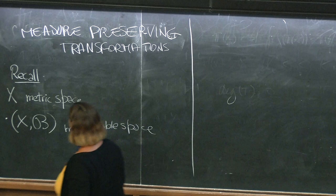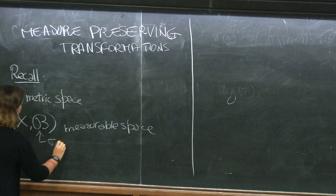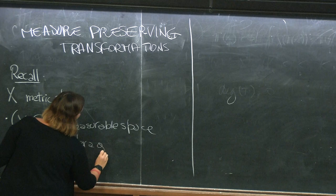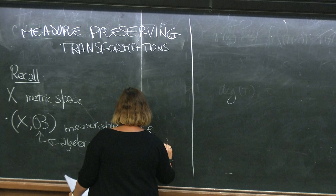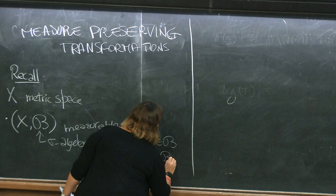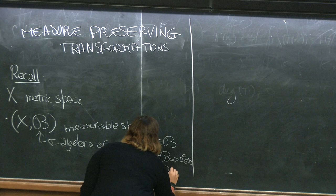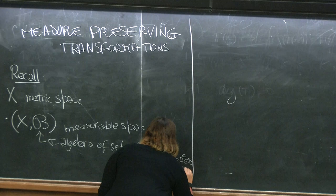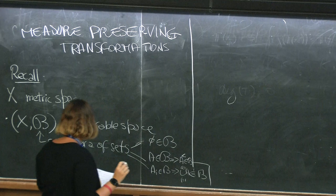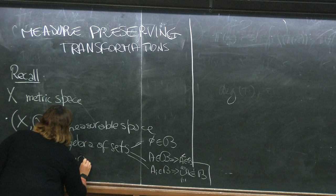So X is our metric space and B is a sigma algebra of sets. I remind you that it means that it contains the empty set, and if it contains a set then it contains its complement, and also if it contains a countable number of sets, then it contains their union.